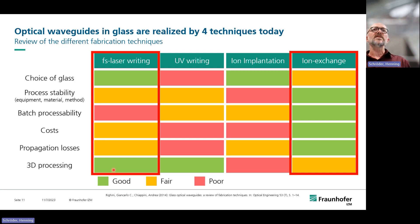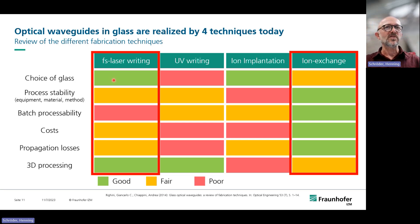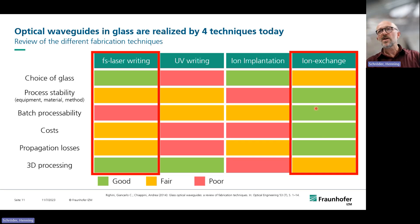3D processing is possible with femtosecond laser writing, and we are quite open regarding the choice of glass. On our roadmap we plan to combine both: the femtosecond laser writing — which is a sequential process — for interfaces, short lines, and special 3D cases; and the ion exchange for high-volume processing in two dimensions, which we have developed as a core technology for more than 20 years.